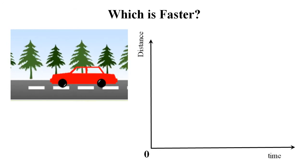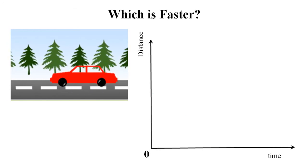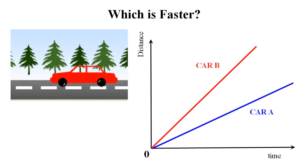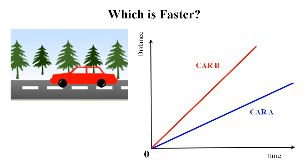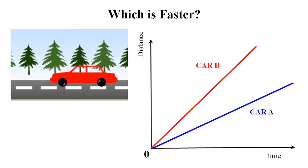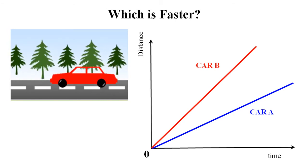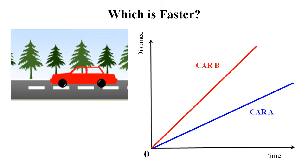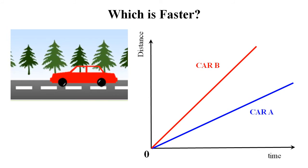Let's try to find an answer for the following example. Consider two bodies, Car A and Car B, moving at constant speed but at different speeds. Our task is to find which one is moving at higher speed and which is moving at a slower rate, using the concept of speed given by the slope of the graph — distance divided by time.